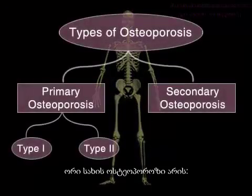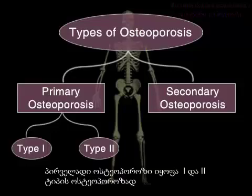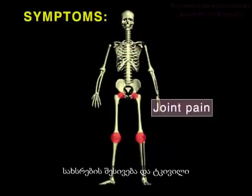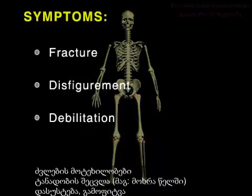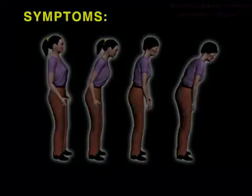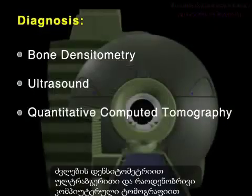There are two types of osteoporosis: primary and secondary osteoporosis. Primary osteoporosis is in turn divided into type 1 and type 2. Symptoms of osteoporosis are swelling and joint pain, fracture, disfigurement and debilitation, and kyphosis.